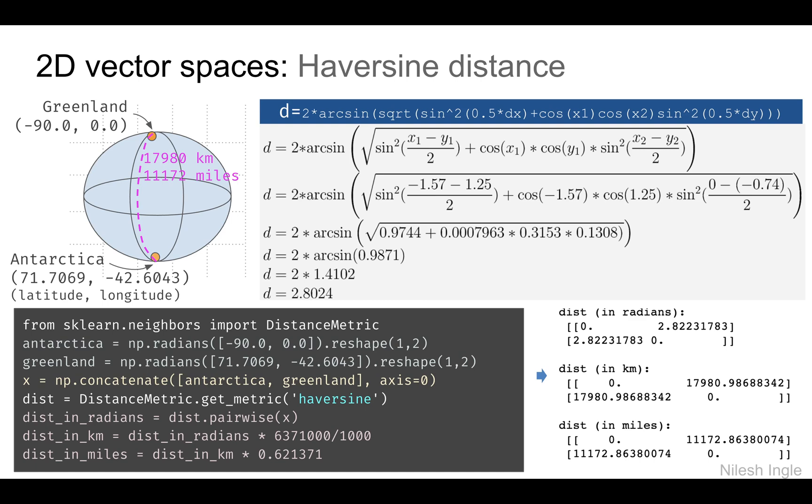On the figure on the left, we can see the planet Earth with two locations: one at these latitude longitude coordinates in Antarctica and the other in Greenland. If we calculate the distance between these two points along the surface of Earth, we would use haversine distance.